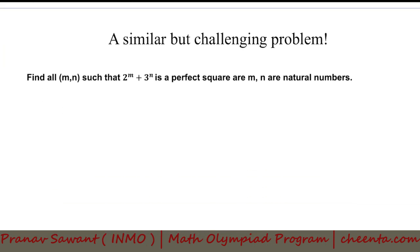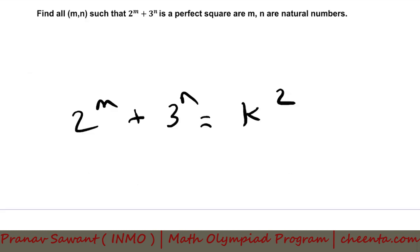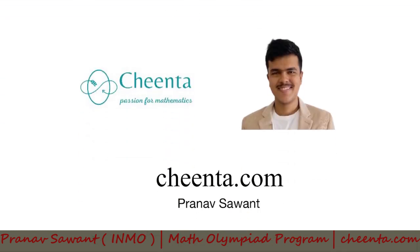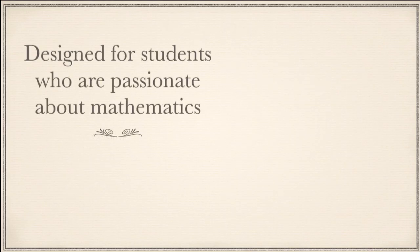At the very end I have a similar but challenging problem for you: find all (m, n) such that 2^m + 3^n is a perfect square — so 2^m + 3^n = k² for some k, where m and n are natural numbers. As always, if you make any progress on this question or are able to solve it, please let me know in the comment section below, and I'll get back to you.